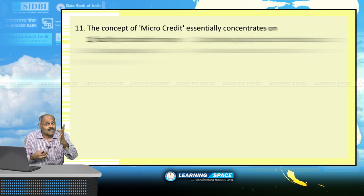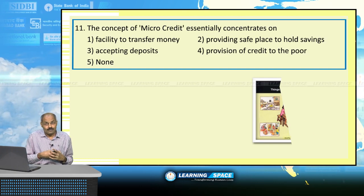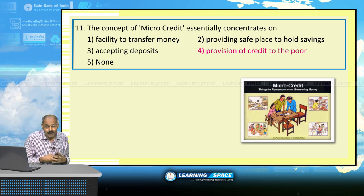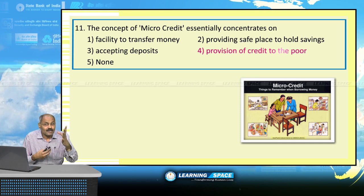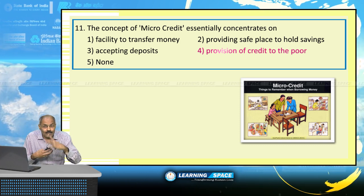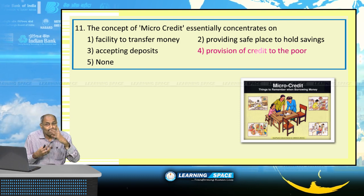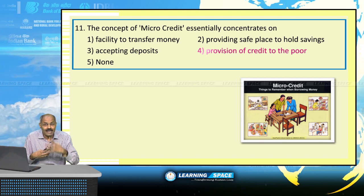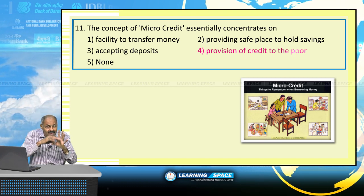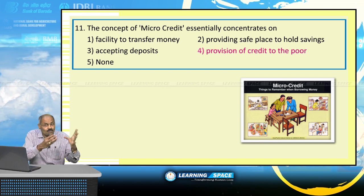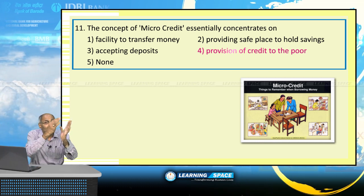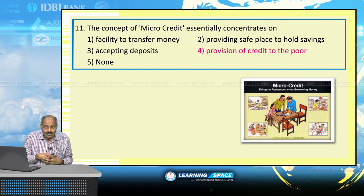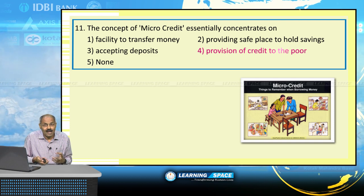The concept of microcredit essentially concentrates on provision of credit to the poor people. Microfinance institutions are taking up microcredit in rural areas, as banks are not able to cater to customers there for providing microcredit. The best example is Bangladesh.